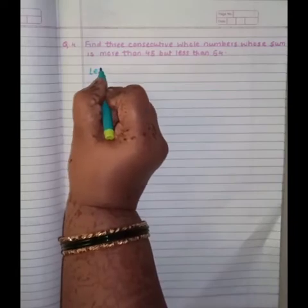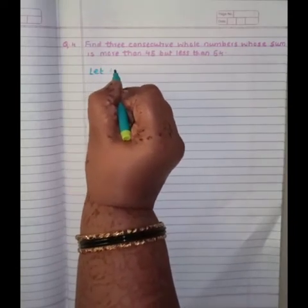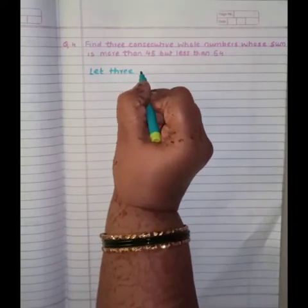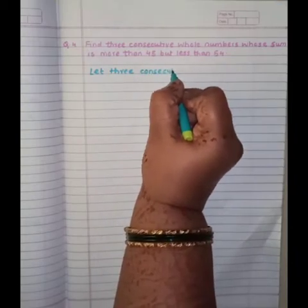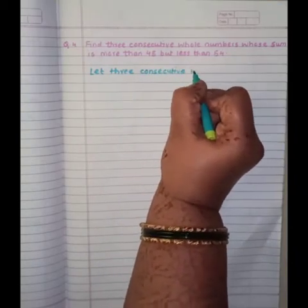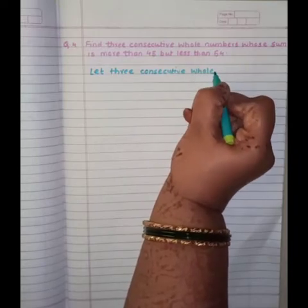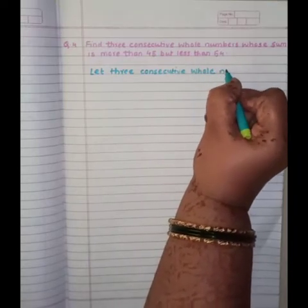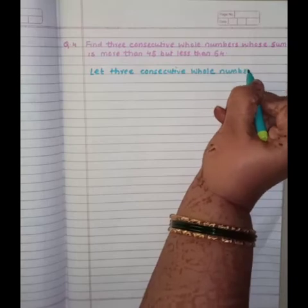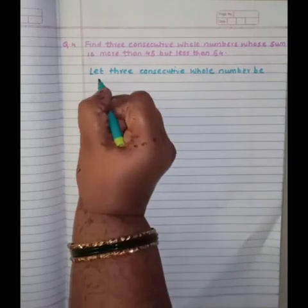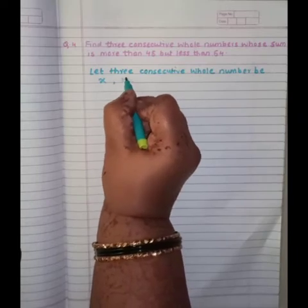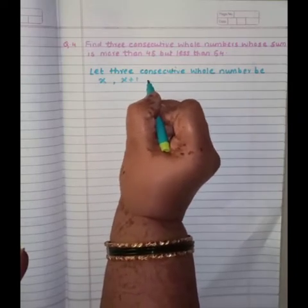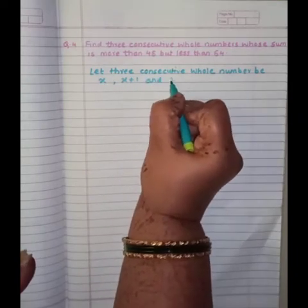Let 3 consecutive whole numbers be X, then 1 after 1 that is why X plus 1 and X plus 2.